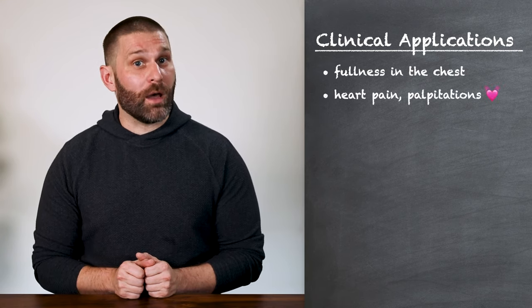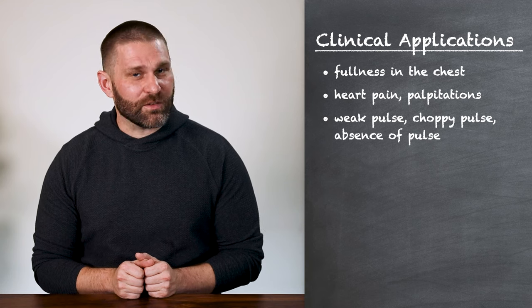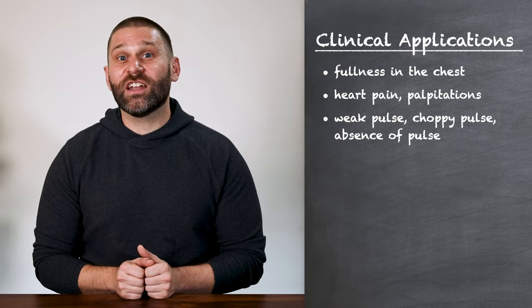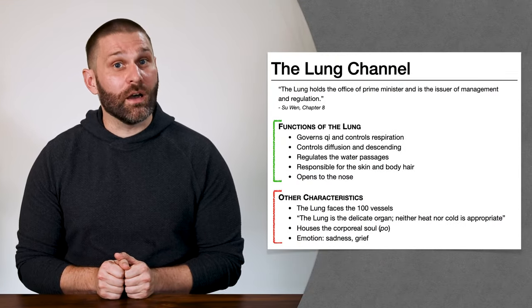When we start looking at point functions and indications, we'll see examples of this relationship between the lung and the heart. Points on the lung channel can treat fullness in the chest, heart pain, or palpitations. Certain points treat conditions of the pulse, like weak pulse, choppy pulse, or absence of pulse. And because heat in the lung can get transmitted into the heart, there are certain points on the lung channel that can calm the heart spirit. This saying from Chapter 8 of the Suwen gives us an overview of the lung's position in the overall functioning of the body, especially regarding its relationship to the heart.